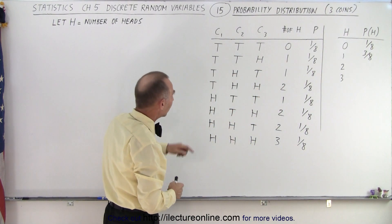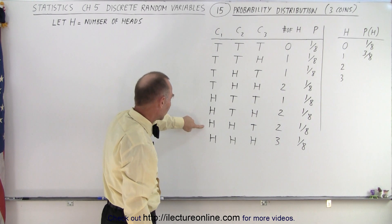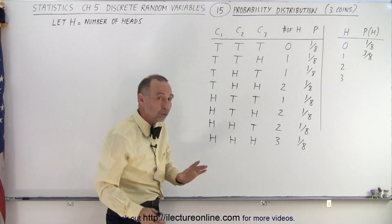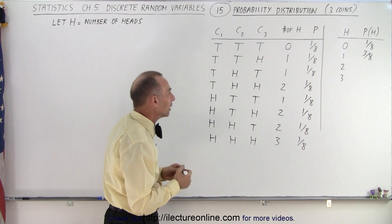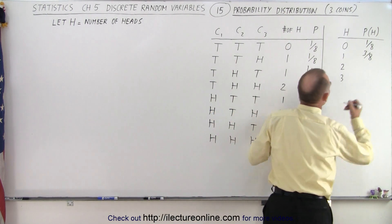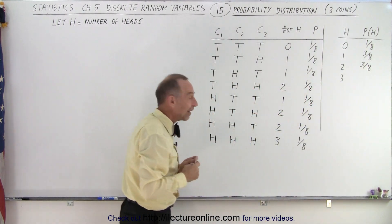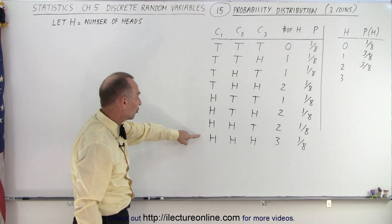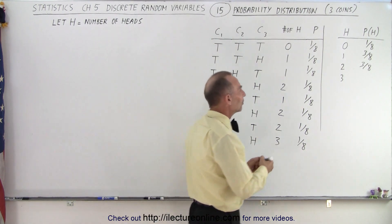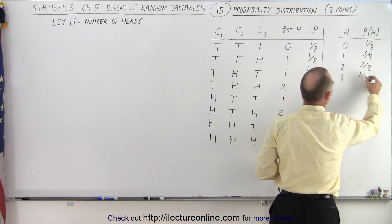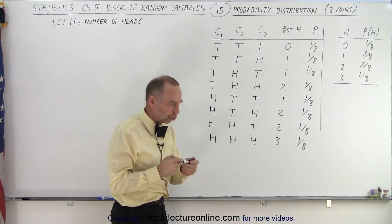For two heads, we again have one combination here, one combination there, one combination there — three combinations where we get two heads. Each of those combinations has one-eighth probability, so the three combined give us a three-eighths probability. Finally, there's only one way in which we could get all three heads, so there's a one-eighth probability for that, and we put one-eighth here.